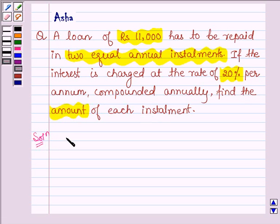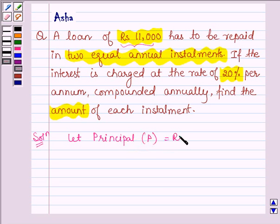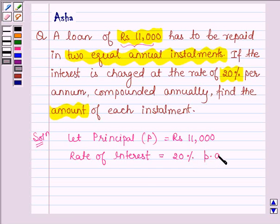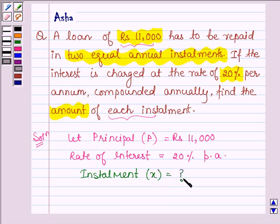Let's start with the solution. Let us denote the loan of rupees 11,000 by the principal P. We are given that the rate of interest is equal to 20% per annum. We have to find the amount of each installment, so let us denote each installment by X — this is what we have to find out.